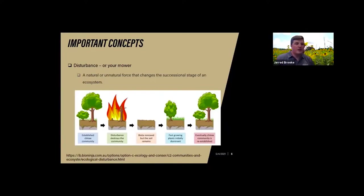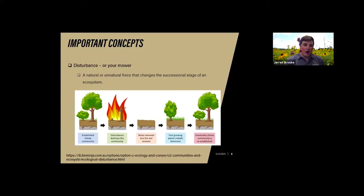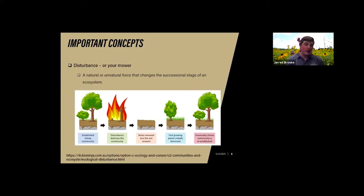Along with succession, another very important concept is disturbance — a natural or unnatural force that changes the successional stage of an ecosystem. In the case of your yard, the disturbance is the mower. The mower is what stops your yard from becoming a forest. By mowing it frequently, you're maintaining it in grass and stopping that ecosystem from advancing to a forest.